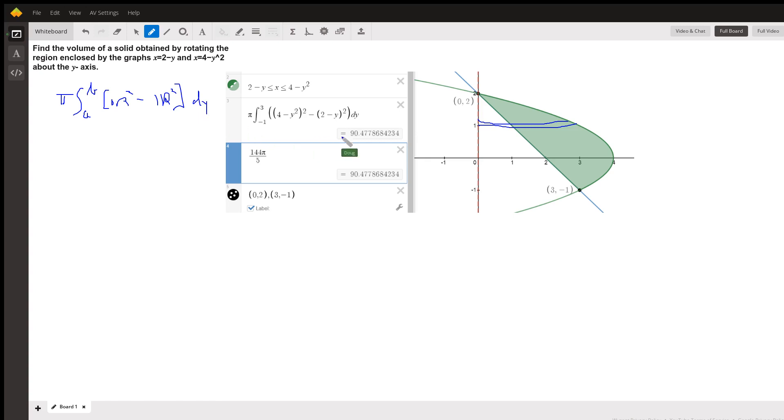And by the way, to find these points of intersection, you're going to have to use the substitution method to find out that the two graphs intersect at (0, 2) and at (3, negative 1).